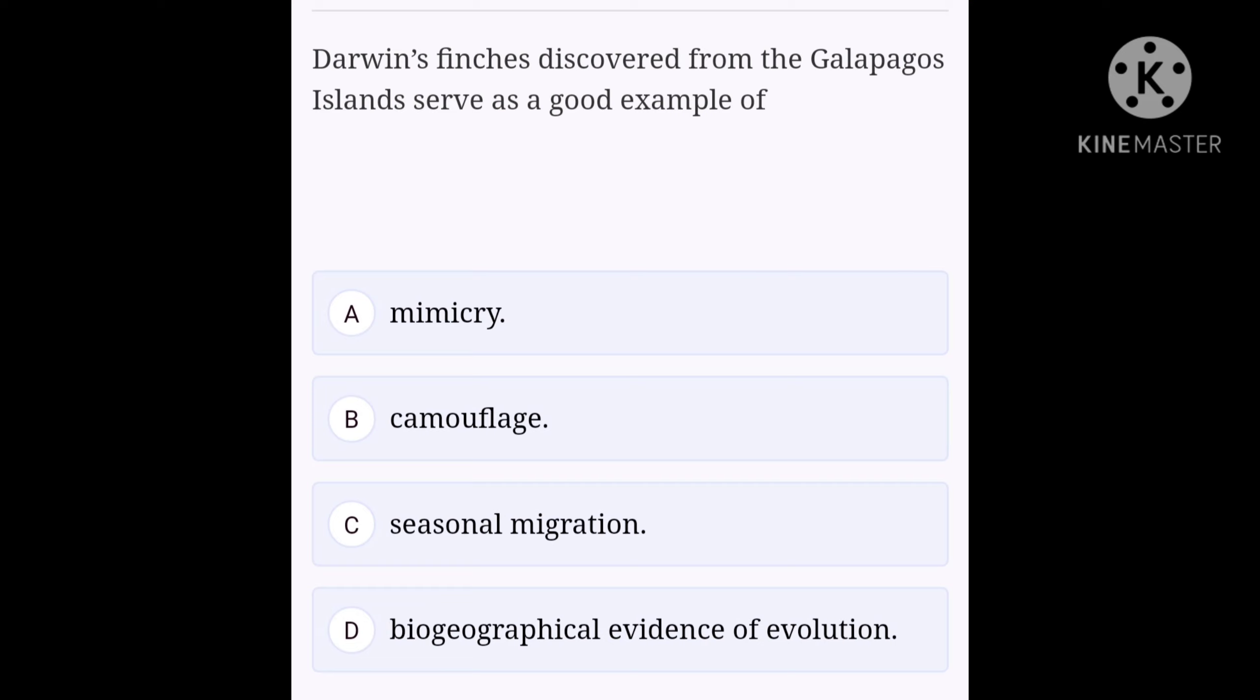Charles Darwin, during his voyage around the world, studied the flora and fauna of Galapagos Islands. Galapagos Islands are called a living laboratory of evolution. Darwin studied 20 related varieties of birds belonging to family Geospizidae, different in shape and size of beak. These birds are now called Darwin's finches. They serve as a good example of biogeographical evidence of evolution. So the correct option is D.